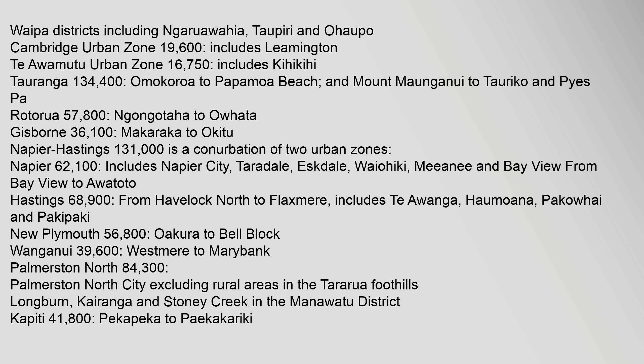Rotorua 57,800, from Ngongotaha to Owhata. Gisborne 36,100, from Makaraka to Okitu. Napier-Hastings 131,000 is a conurbation of two urban zones: Napier 62,100, includes Napier City, Taradale, Eskdale, Whirinaki and Bayview, from Bayview to Awatoto. Hastings 68,900, from Havelock North to Flaxmere, includes Te Awanga, Haumoana, Pakowhai and Paki Paki. New Plymouth 56,800, from Okura to Bell Block. Wanganui 39,600.